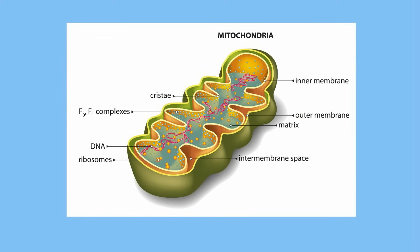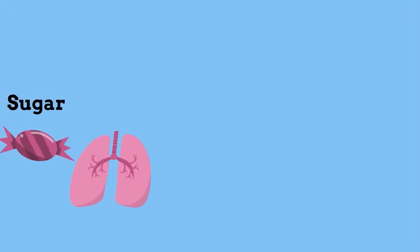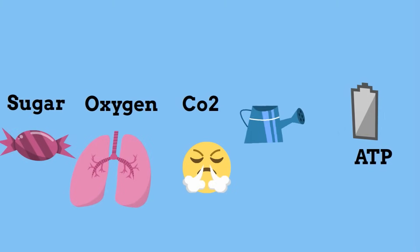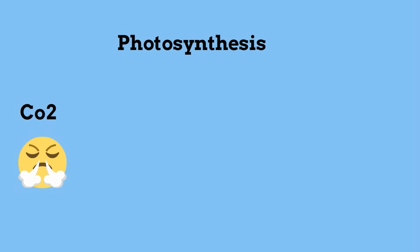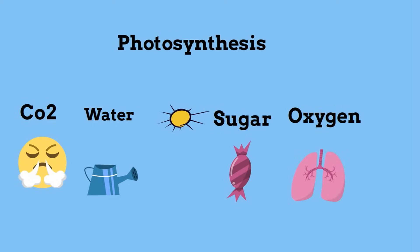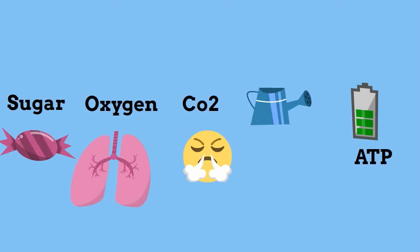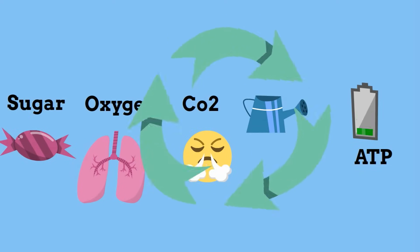At the mitochondria, sugar combines with oxygen to produce carbon dioxide plus water and energy in the form of ATP. Photosynthesis takes carbon dioxide and water with sunlight and makes sugar and oxygen — this is exactly what cellular respiration needs. So at the mitochondria, this sugar is combined with oxygen to make carbon dioxide and water along with ATP. And this cycle repeats over and over again.